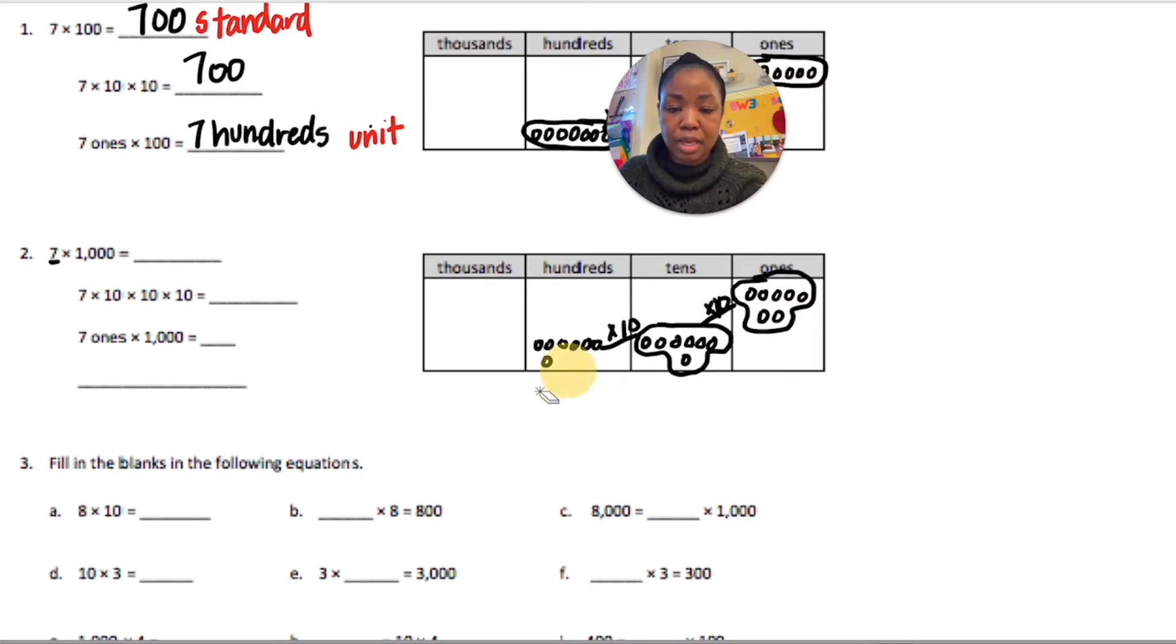Oops, I've done too many there. But then it's going to be times 10 again. So I'm going to move to the thousands. And another way we can see how many times we're doing times 10, this has 1,000. So that would be 3 zeros. So that would be 3 tens. Or 3 times we're doing times 10.